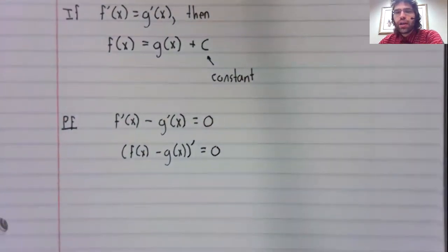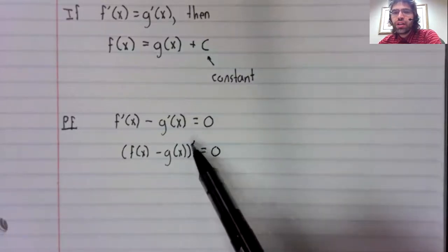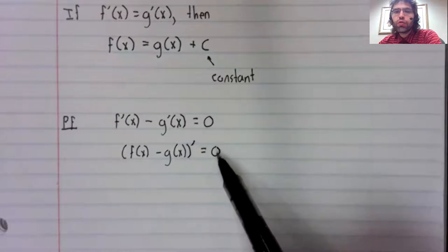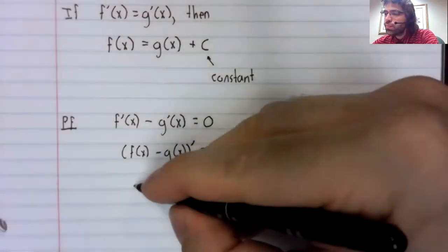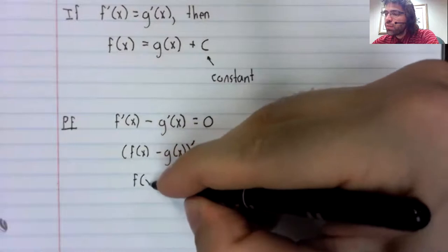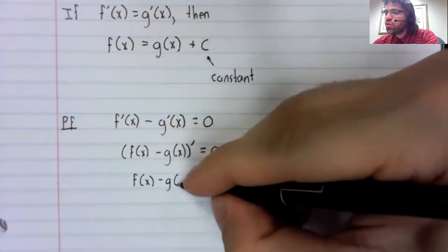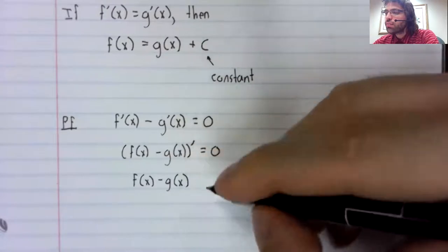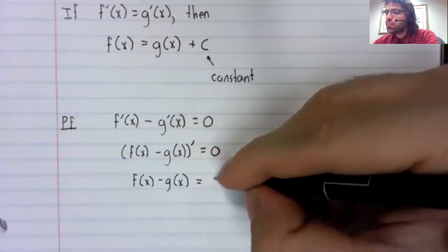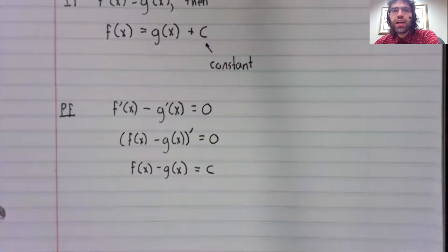And now from the previous video, if the derivative equals zero, then f minus g must be a constant function.